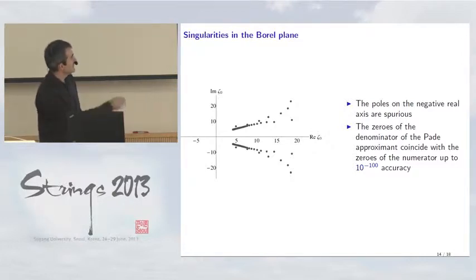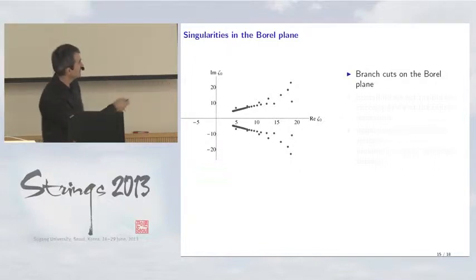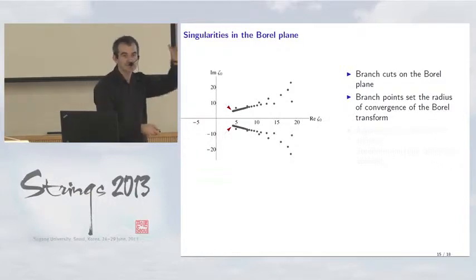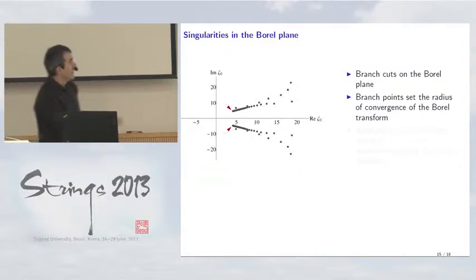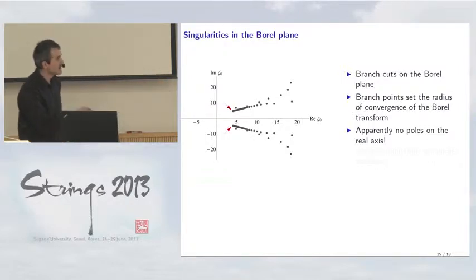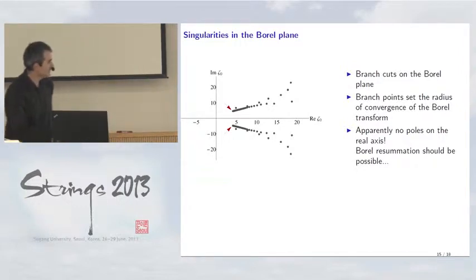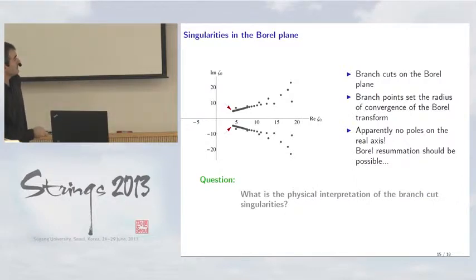The actual structure we find is not isolated poles but branch cuts in the Borel plane. The branch points set the radius of convergence of the Borel transform, consistent with the factorial growth and the prefactor seen in the expansion. Crucially, we do not find any poles on the real axis, suggesting that Borel resummation of this derivative expansion in N=4 super-Yang-Mills should in fact be possible.